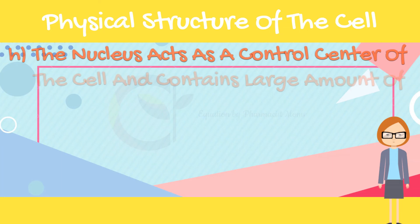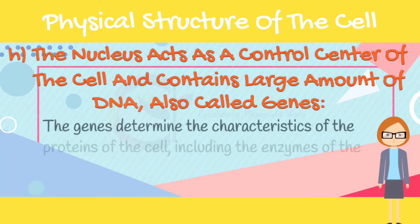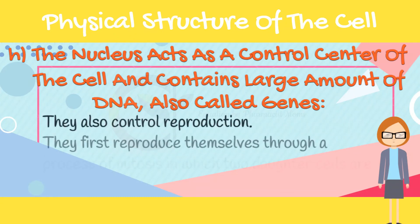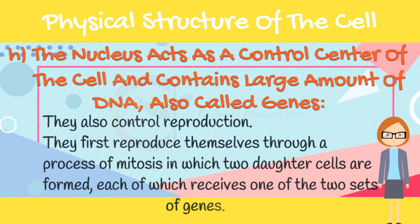The nucleus acts as a control center of the cell and contains large amounts of DNA, also called genes. The genes determine the characteristics of the proteins of the cell, including the enzymes of the cytoplasm. They also control reproduction. They first reproduce themselves through a process of mitosis, in which two daughter cells are formed, each of which receives one of the two sets of genes.